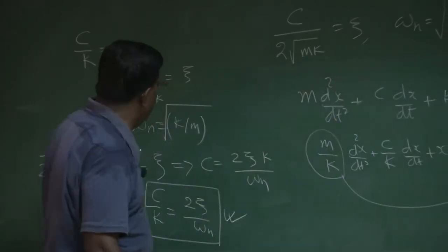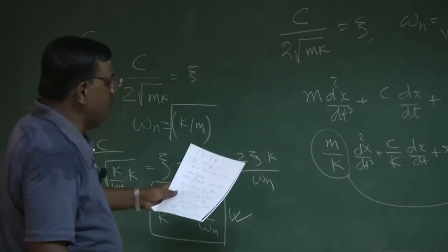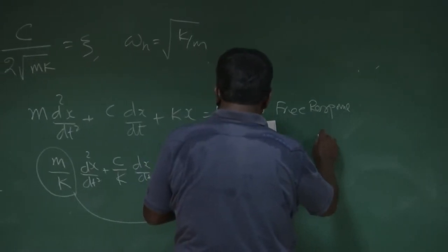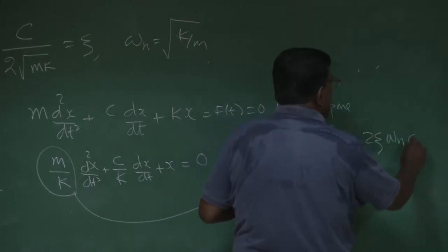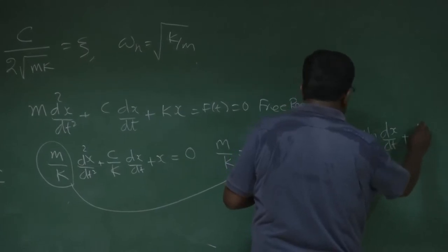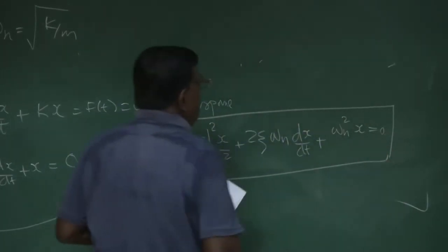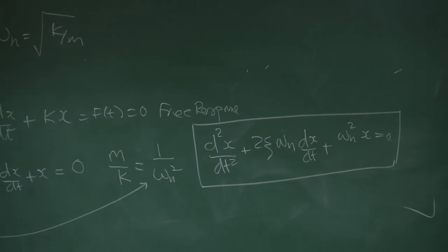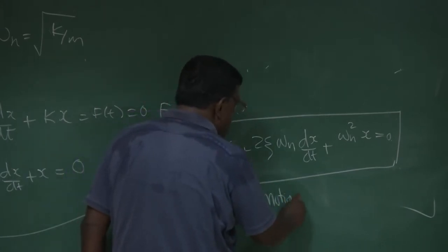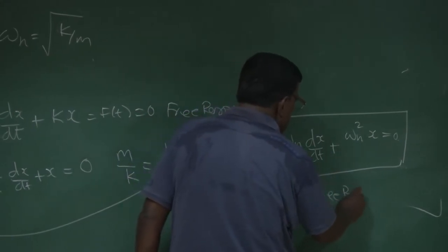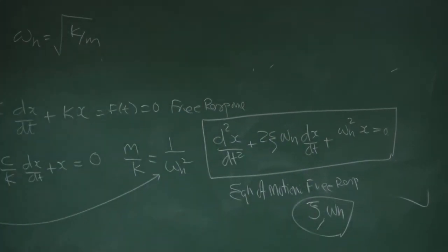Substituting these results into the equation of motion, the equation becomes: d²x/dt² plus 2 zeta omega-n dx/dt plus omega-n squared x equals 0. This is the equation of motion for free response expressed using zeta and omega-n, and most of our analysis will use this form.